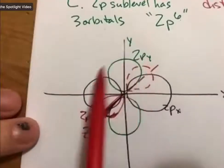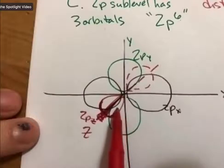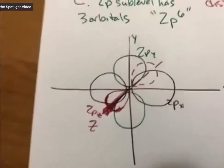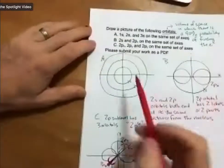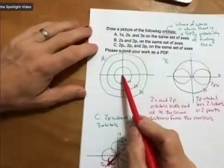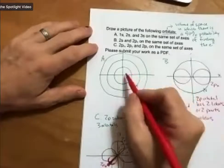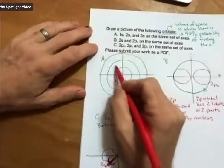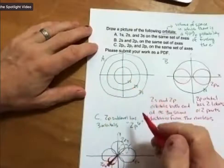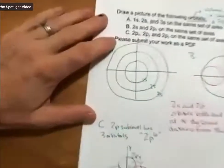If this question were about 3s and 3p's, 3p orbitals have the same designations, they're just larger. Let me zoom back out.